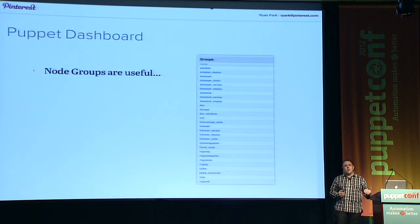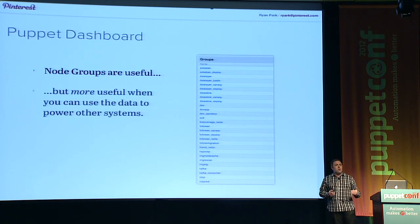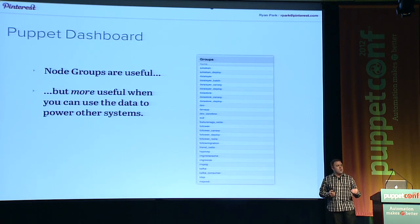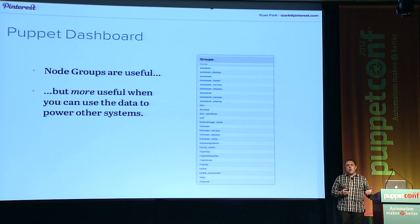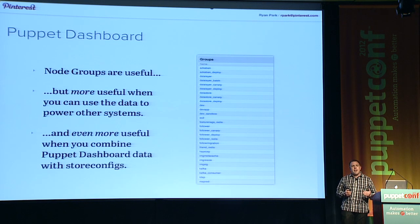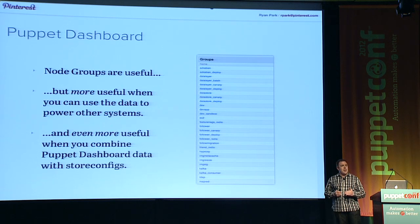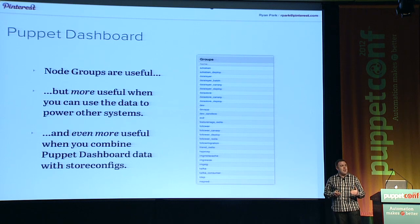We make heavy use of the node groups feature to logically organize hosts in our environment by the services they provide, and we use these node groups to inform other systems of how the services are configured. For example, a central monitoring system needs to know what servers are live in our web app pool. We get a lot more power from this data by joining the Puppet Dashboard's node group data with the Puppet stored configs data — both can use MySQL as a backing store, so we can literally join that data to report on how servers should be configured and how they actually look.